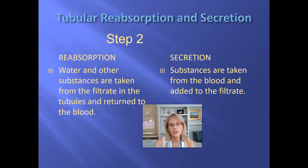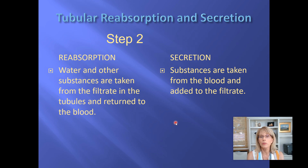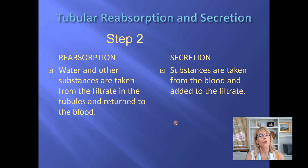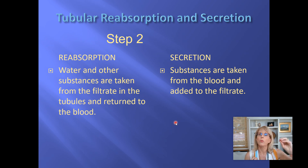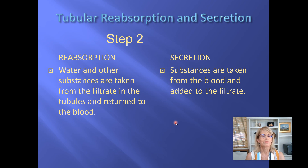Now we move to reabsorption and secretion — very often called tubular reabsorption and tubular secretion. Tubular reabsorption happens in the tubules: the proximal convoluted tubule, the nephron loop, and the distal convoluted tubule. Tubular secretion happens in those same places. That doesn't mean what happens in each area is the same — all three are distinct, and we'll talk about them one at a time.